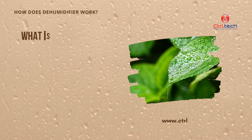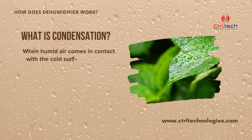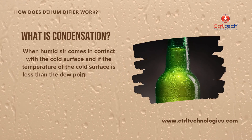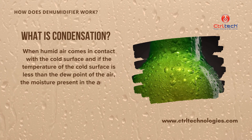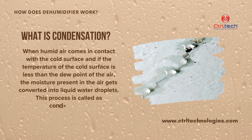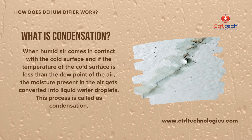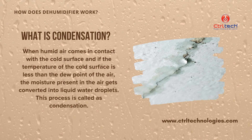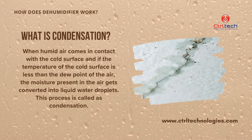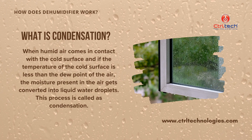To understand the condensation dehumidifier working principle, let's first understand what condensation is. When humid air comes in contact with a cold surface and the temperature of that cold surface is less than the dew point of the air, then the moisture present in the air gets converted into liquid water droplets. For example, in summer when there is a hot and humid climate outside and you run the air conditioner at night inside your home, in the morning you find water drops on the window glass — that is because of condensation of moisture available in the air. This is condensation.